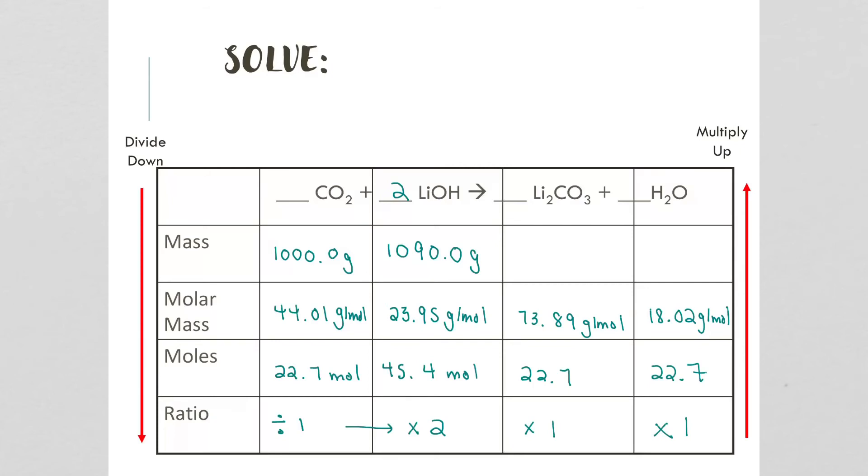If we multiply the first one by 22.7, because we multiply up, we would end up with 1,677.3 grams of lithium carbonate. And then the other one, 22.7 times 18.02, we end up with 409.05 grams of water.